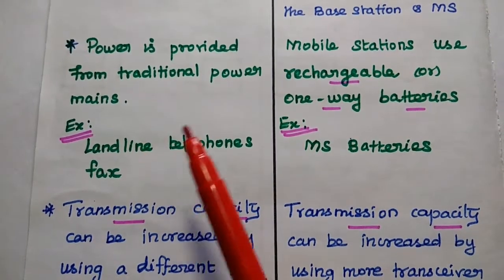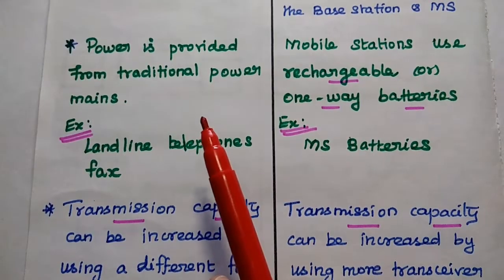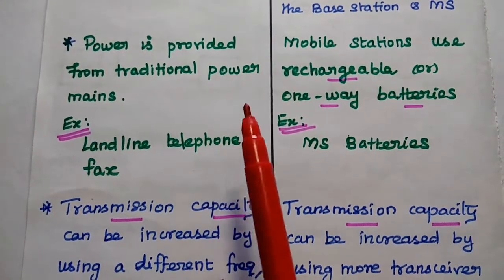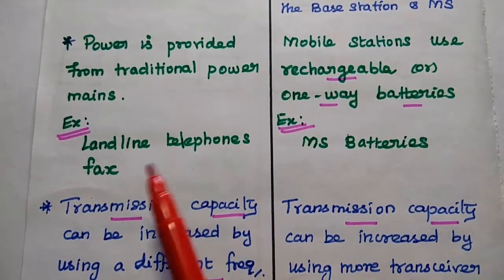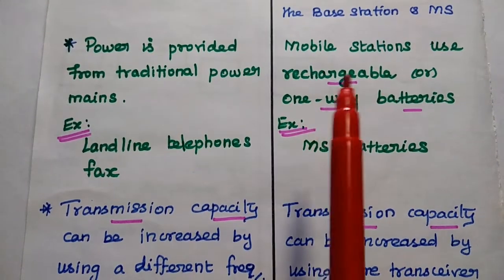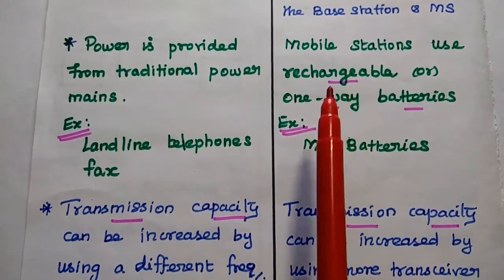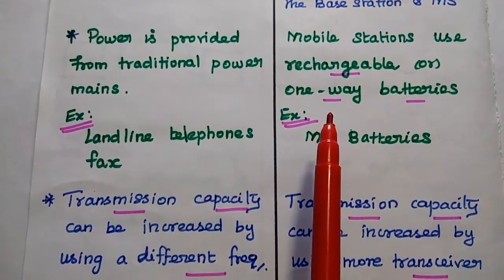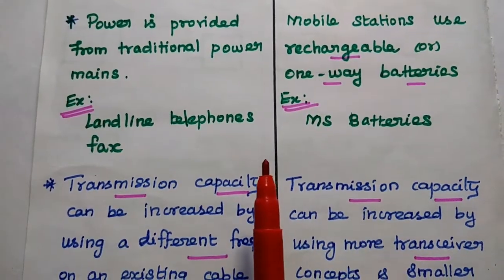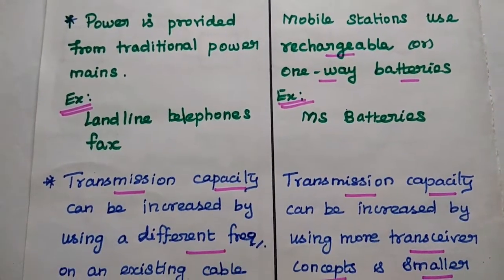In wired communication, the power is provided from traditional power mains, for example landline telephones and fax. But in wireless communication, mobile stations use rechargeable or one-way batteries, for example mobile station batteries.